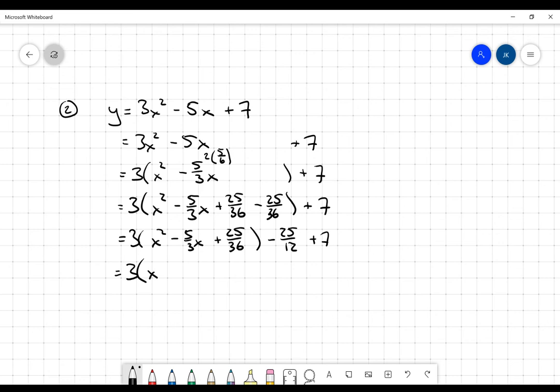The trinomial I'm left with is a perfect square. It'll be (x minus five-sixths)². Then I need negative 25 over 12 plus seven. Finding common denominators, it's negative 25 over 12 plus 84 over 12. Putting it all together, I get 3(x - 5/6)² + 59/12.